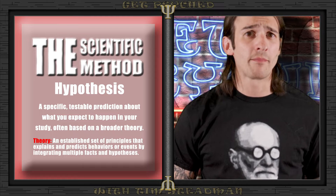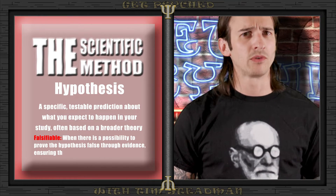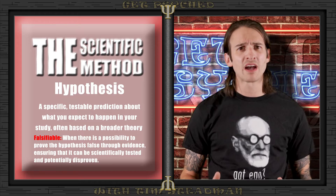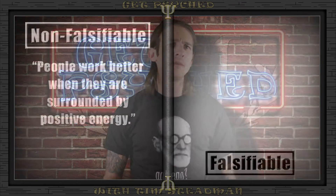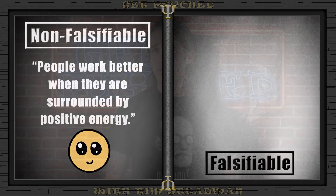A hypothesis is essentially a prediction or educated guess about what will happen in the study, generally based on a theory. When coming up with our hypothesis, we have to make sure that it is falsifiable — meaning there must be a possible outcome that can prove it wrong. An example of a non-falsifiable hypothesis might be something like 'people work better when they are surrounded by positive energy.' At first glance this seems like a solid question, but when we analyze it further, we start to see the issues.